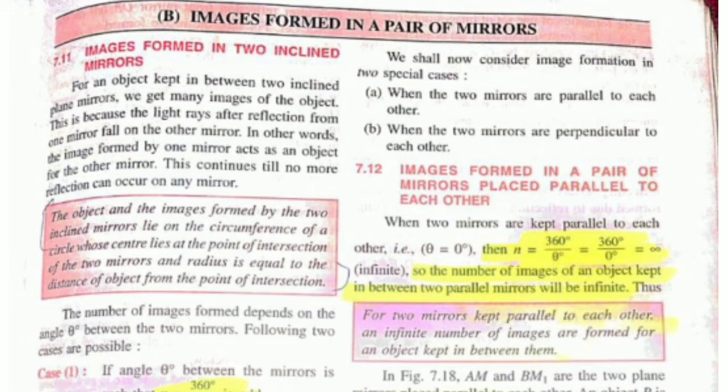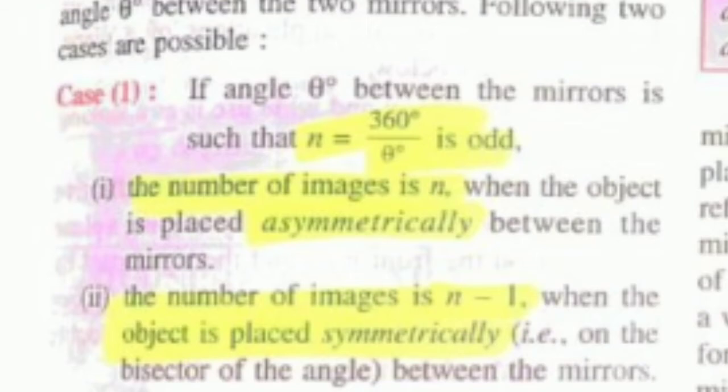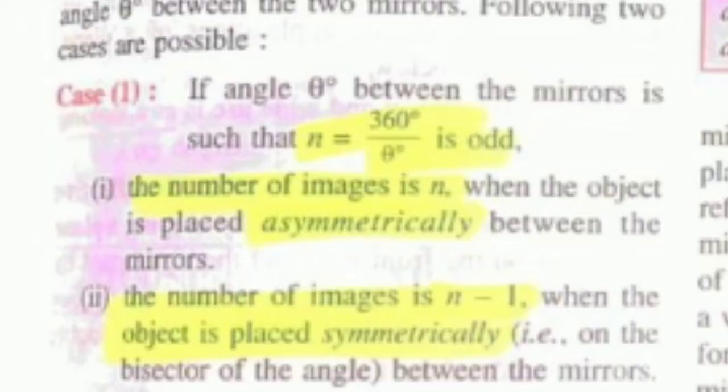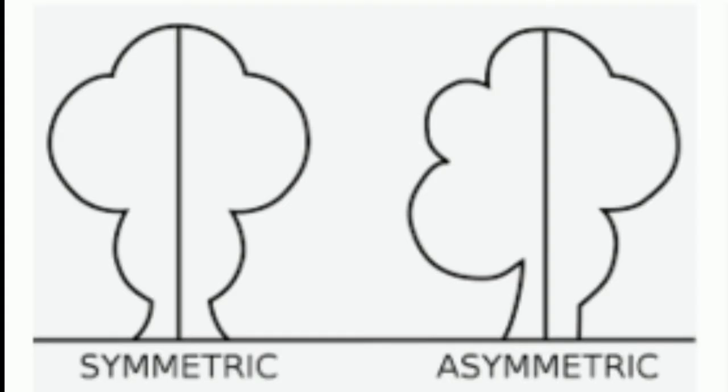First case is if angle theta between the mirrors is such that n equals 360 degrees divided by theta is odd. There are two cases. When the number of images is an odd number which is not divisible by two, if the object is placed asymmetrically between the mirrors - this is the difference between symmetric and asymmetric: symmetric means equal halves, asymmetric means unequal halves. If the object is asymmetrically placed then the number of images will be n.